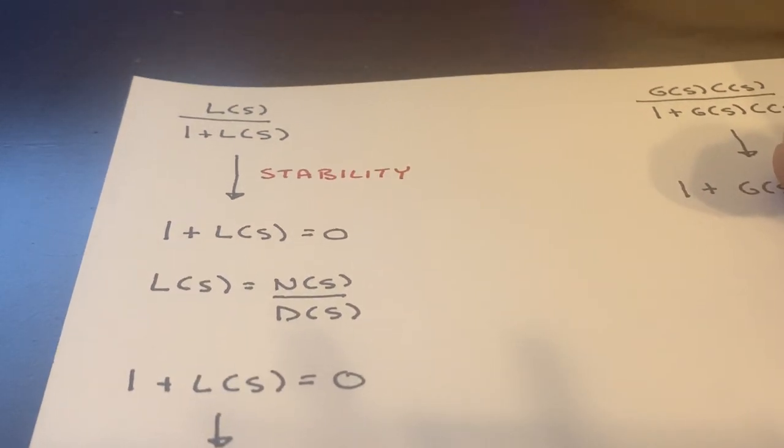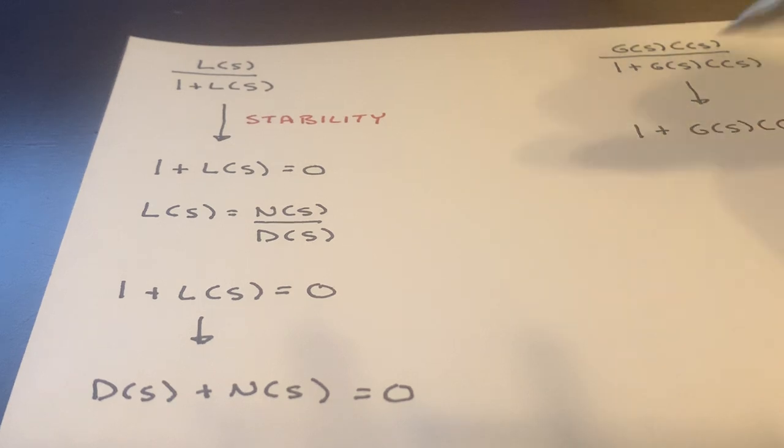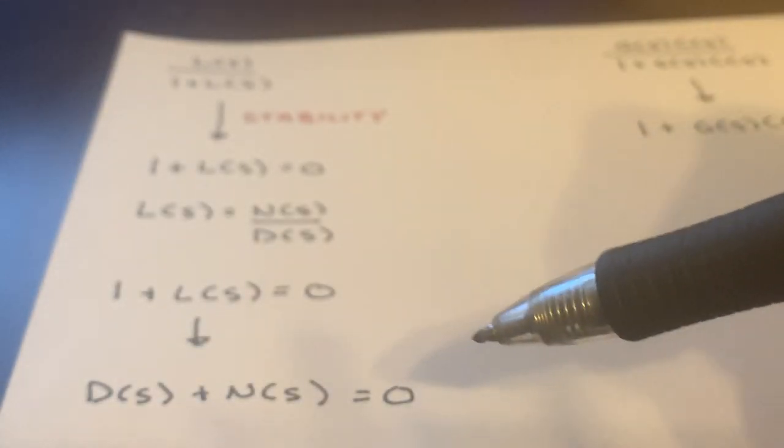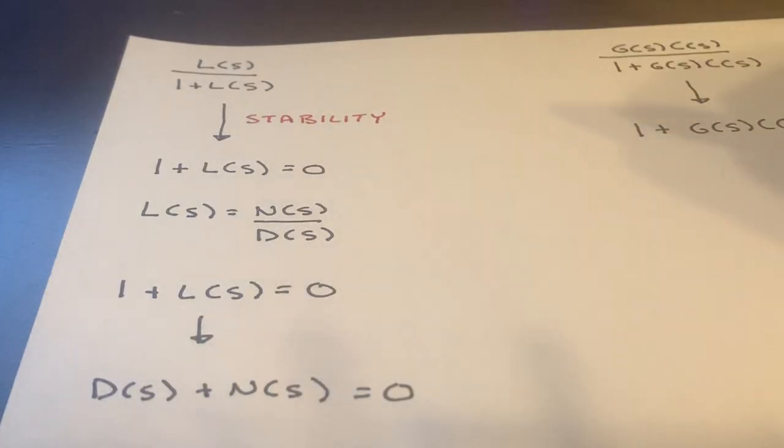And then when I plug this in, one plus L of S equal to zero, this just simply becomes D of S plus N of S is equal to zero, or N of S plus D is equal to zero. And that's the same equation we used before for the poles.